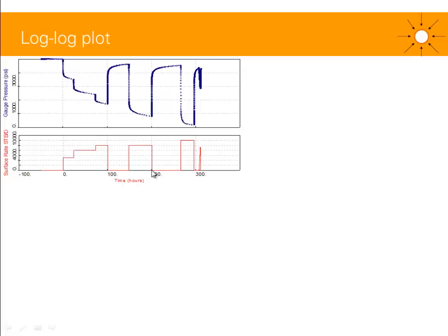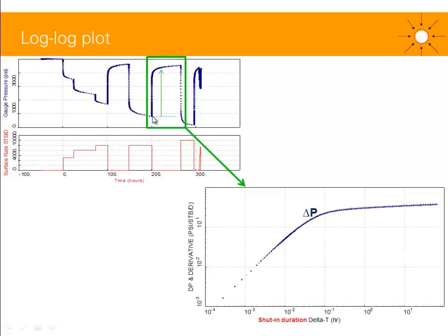Let's have a look at the well testing tools, and the first one is the log-log plot, also called the derivative plot. Here I have gauge pressure with three PBUs. For this particular PBU, I can plot the pressure signal — pressure(T) minus pressure at shut-in — and this is called the delta P plot. I plot this versus the shut-in duration, delta T, on a log-log scale, which makes it easier to identify the different flow behaviors and flow regimes.